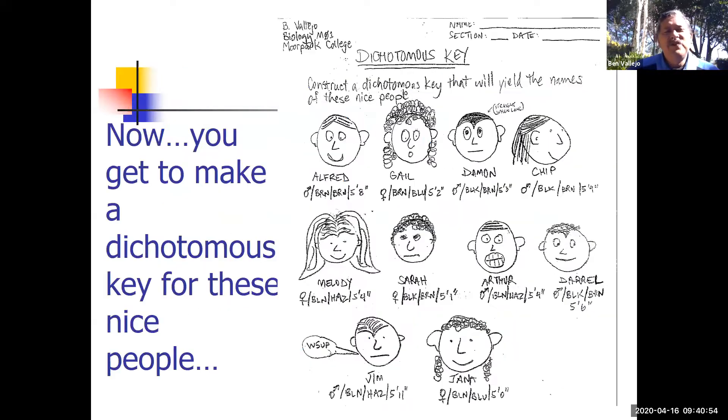This is what you're going to do on your own today. This is my drawing. It says 'Now you get to make a dichotomous key for these nice people.' There's Melody—do you see her? See right there? Hi Mel, oh my goodness.